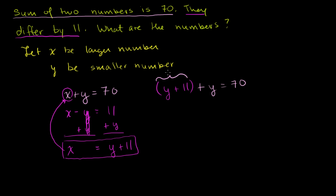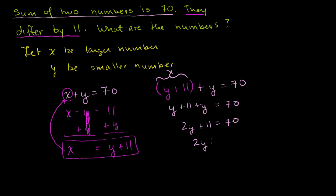I substituted x with y plus 11, because that's the constraint the second equation gave us. Now let's solve for y. We get 2y plus 11 is equal to 70. Subtract 11 from both sides and we get 2y is equal to 59. So y is equal to 59 over 2, or 29.5.